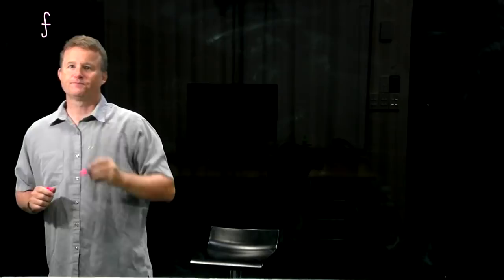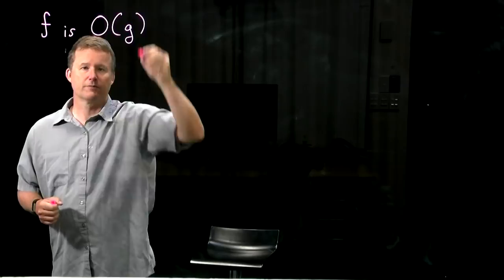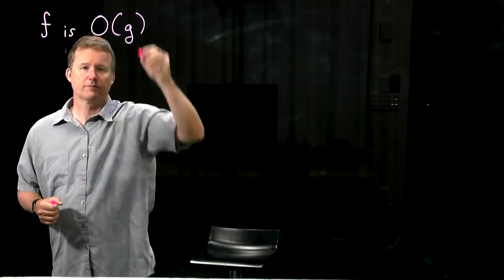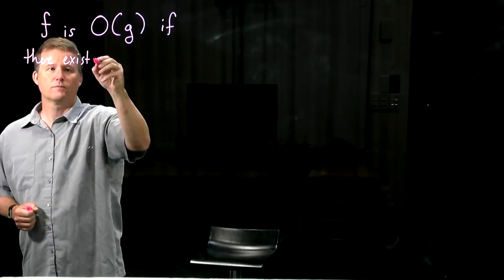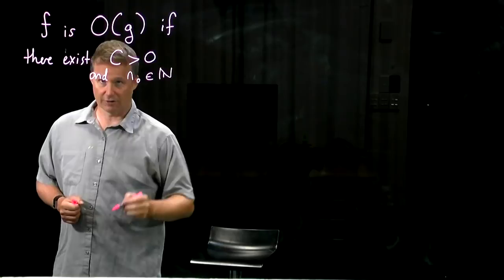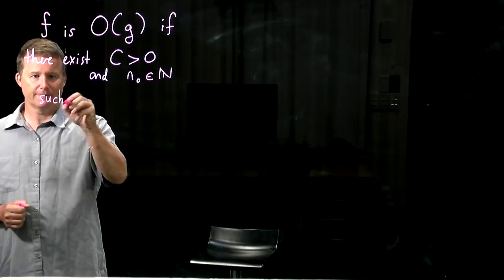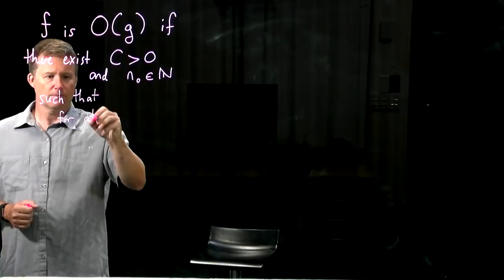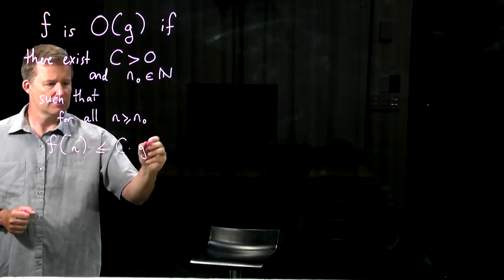Suppose I have a function f and another function g. These are both functions defined on the natural numbers and they take non-negative values. We say f is big O of g if — there are a few quantifiers here — there exists some positive constant c, some real number, and some natural number n0, which we're going to call the threshold, such that for all n past this threshold, f of n is at most c times g of n.